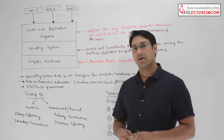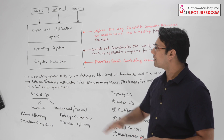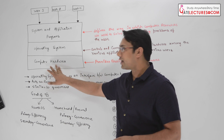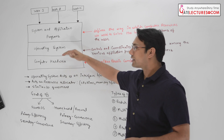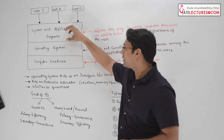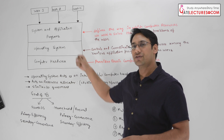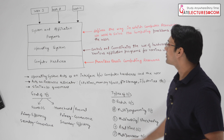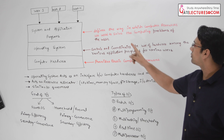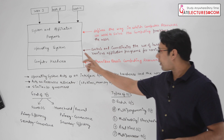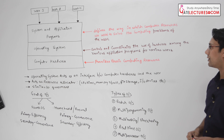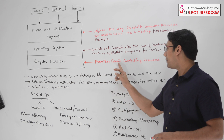Now let us discuss what is an operating system. An operating system acts as an interface between the computer hardware and the software. As you can see in this diagram, there is computer hardware, and the operating system resides over the computer hardware and provides an interface to the application program so that the application program can use the computer hardware efficiently. The application and system programs define the way in which computer resources are used to solve the computing problems of a user. The operating system controls and coordinates the use of hardware among the various application programs for various users.